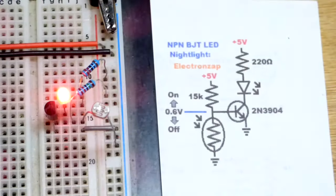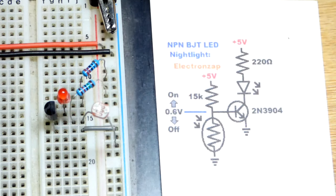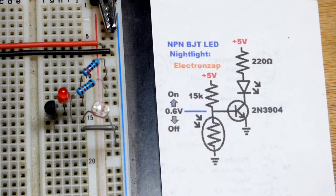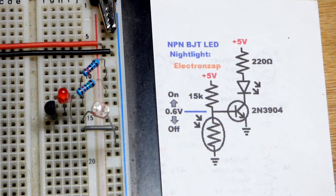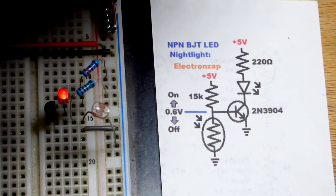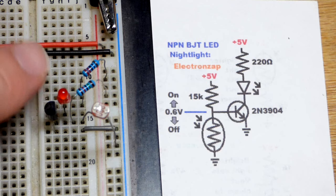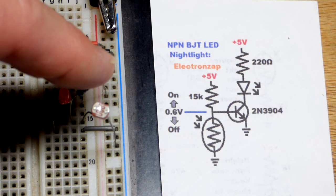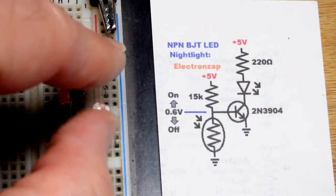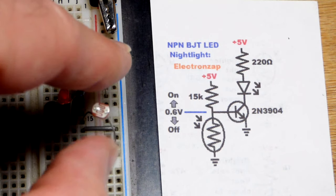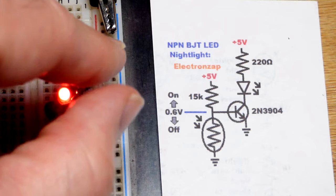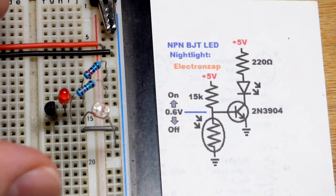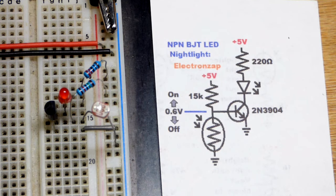It's almost fully on at that point. As I make the lamp brighter, the LED fades off until it's off completely. Sometimes there's a reflection that shows up, so if you shade the LED you can tell if it's a reflection or not.